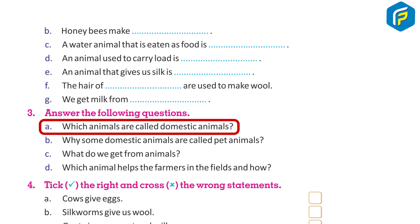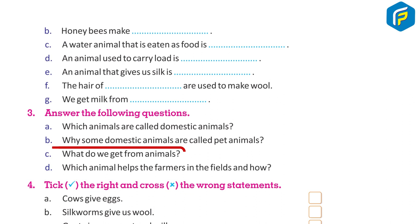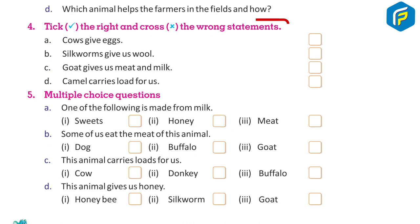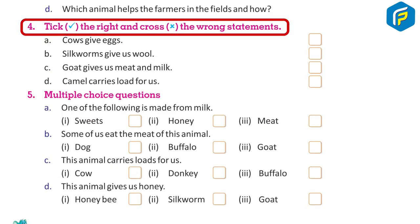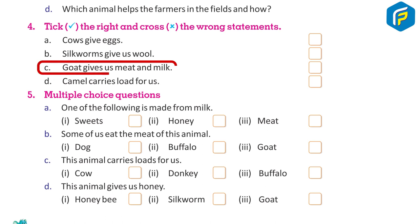Answer the following questions: a) Which animals are called domestic animals? b) Why are some domestic animals called pet animals? c) What do we get from animals? d) Which animals help the farmer in the fields and how? Four — tick the right and cross the wrong statements: a) Cow gives eggs. b) Silkworm gives us wool. c) Goat gives us meat and milk. d) Camel carries load for us.